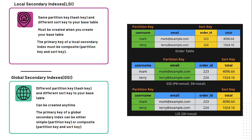To understand the concept and necessity of secondary indexes, let's consider a scenario. Let's say we have a DynamoDB table named 'order', which we can see on the screen, in which we have a partition key and a sort key. So the primary key is basically a composite key. The partition key is username and the sort key is the order ID.